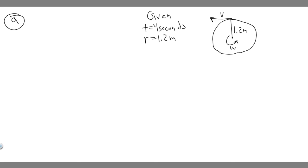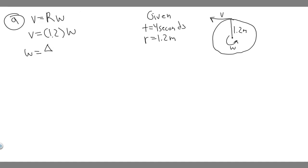Now let's start with part A: what is the linear speed of the child? To solve for linear speed, you need the formula V equals radius times omega, where omega is the angular velocity. We know the radius is 1.2 meters, but we don't know omega yet, so we need to solve for that first.